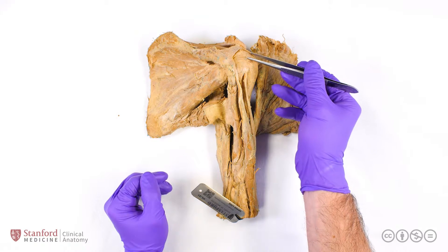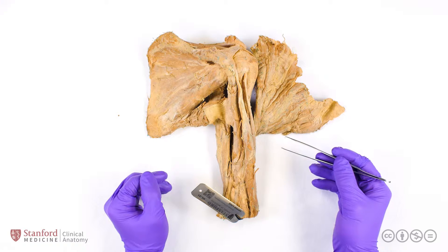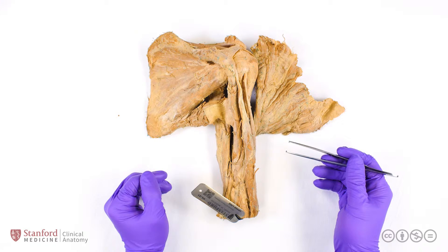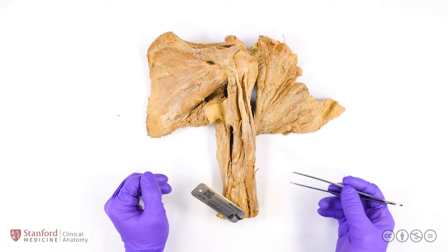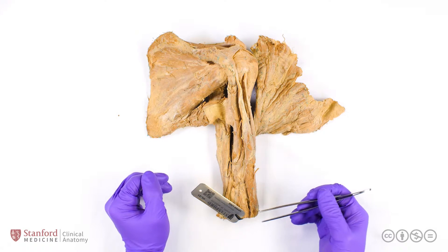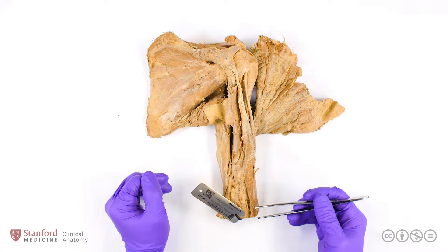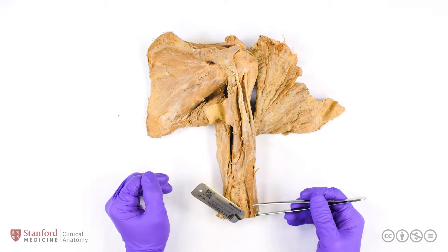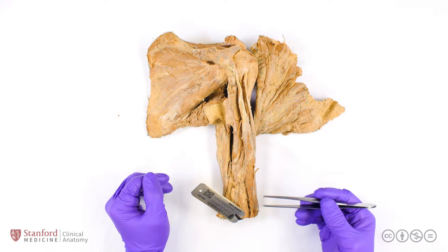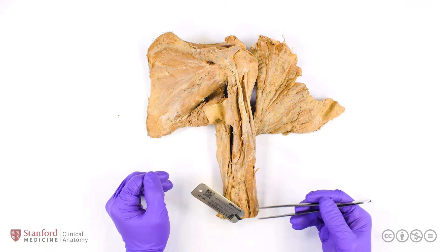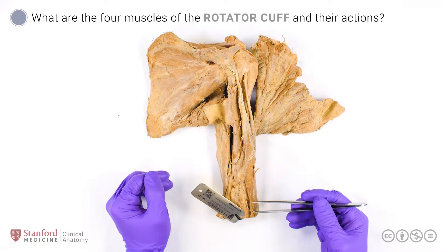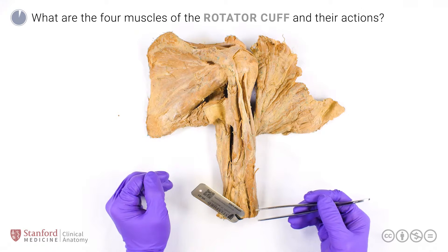This is the superior or proximal end of the humerus, and in this direction is the inferior or distal end of the humerus. Let's begin with the rotator cuff. What are the four muscles of the rotator cuff and what are their actions?